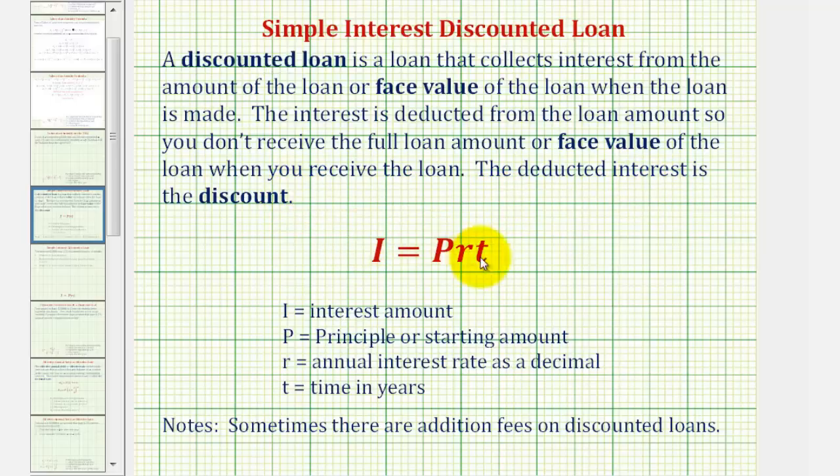For review, here's the simple interest formula where I is the interest amount, P is the principal or starting amount of the loan, R is the annual interest rate expressed as a decimal.